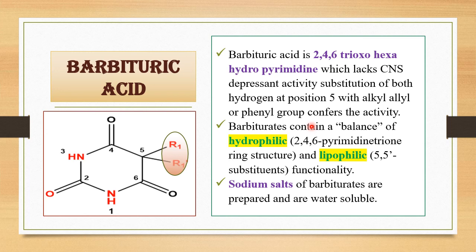Barbiturates derived from barbituric acid contain a balance of hydrophilic and lipophilic substituents in their chemical structure, as this is required for proper pharmacokinetics. The hydrophilic region of the barbiturate structure is the 2,4,6-pyrimidine trione ring, and the lipophilic portion is the 5,5-disubstituents at that site. Additionally, the sodium salts of barbiturates are prepared to produce a water-soluble formulation.